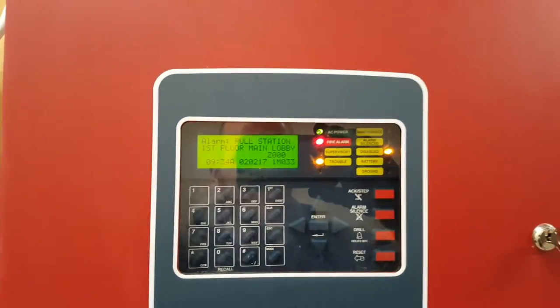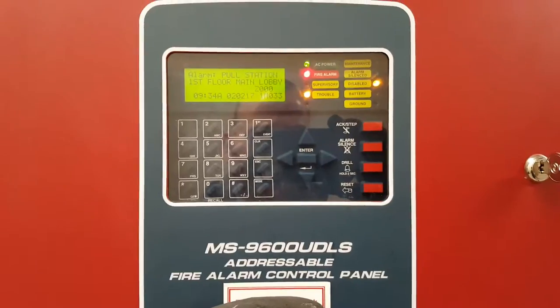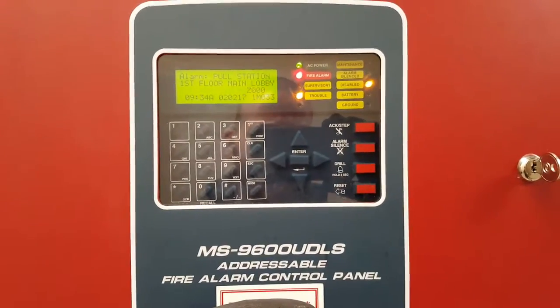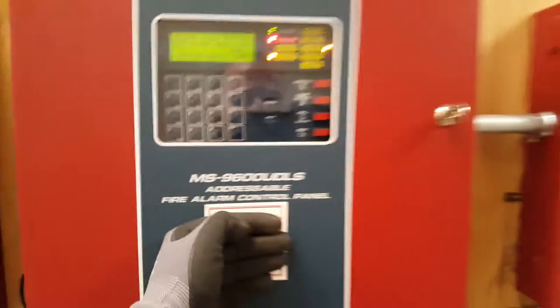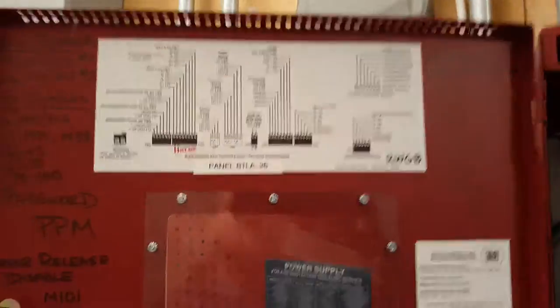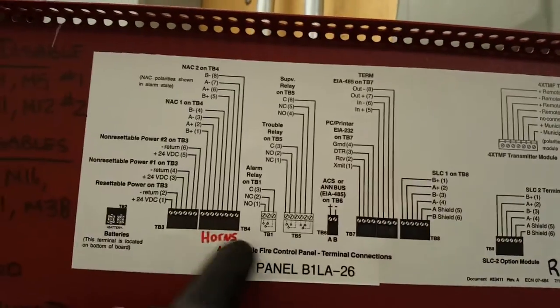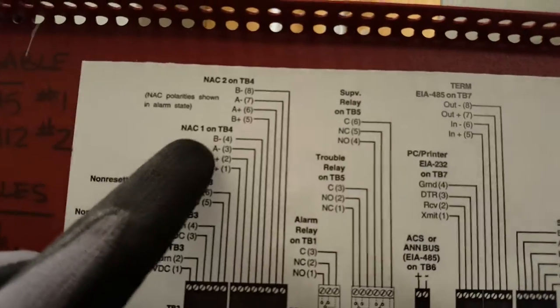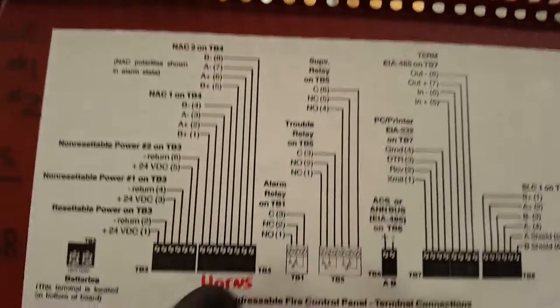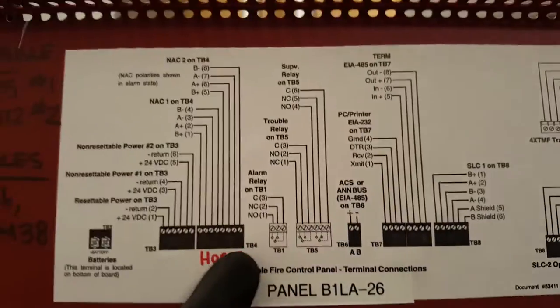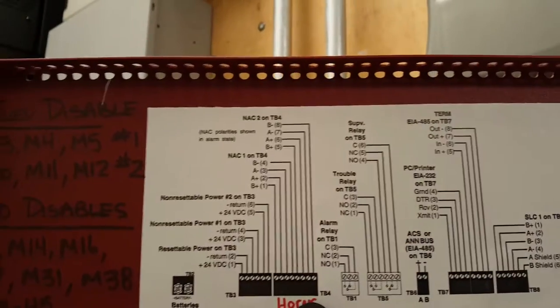This video is going to show you how to disable the NACs on a MS9600 UDLS Firelight panel. What you're going to want to do first is go to your legend or your map and you're going to see the connections. You're going to see the NAC circuits here — NAC1, NAC2 — on the TB4 connection.